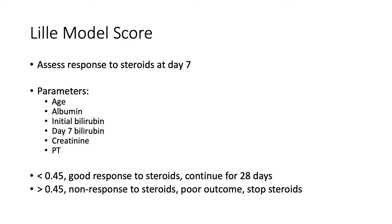For steroid treatment, we would normally give 40 milligrams of prednisolone for 28 days in those with a GAS of nine. In terms of assessing response to steroids, we usually check blood tests on day seven and can calculate the Lille score. A Lille score greater than 0.45 suggests non-response to steroids and a poor outcome, and therefore steroids should be stopped with consideration of parallel advanced care planning. Patients with active untreated infection or GI bleeding have steroids initially contraindicated, although they could be started once these conditions are controlled. If a patient on steroids develops an acute infection or GI bleeding, the steroids should be paused.